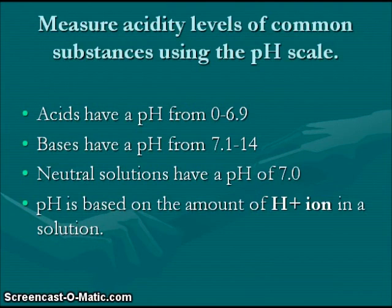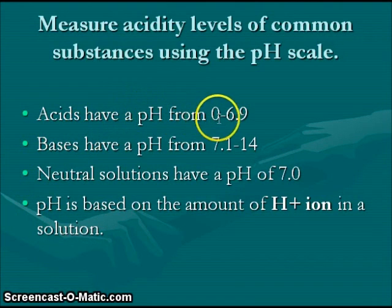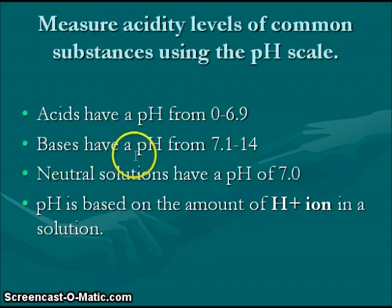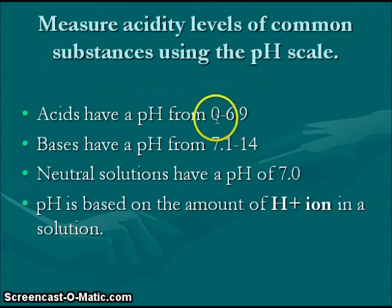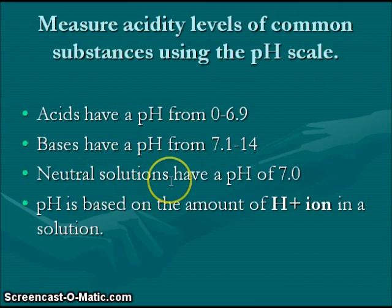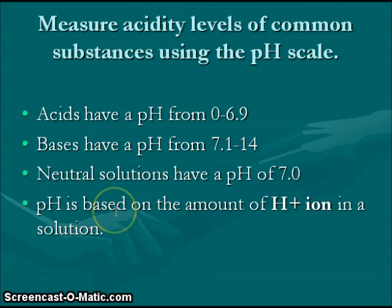Let's do a quick review of the pH scale. Acids have a pH under 7, bases have a pH over 7, and the pH scale goes from 0 to 14. Neutral solutions have a pH of 7, and pH is based on the concentration of hydrogen ions in solution.